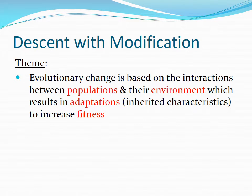This one slide summarizes the next three weeks of material. If you understand this concept, you're going to understand all of evolution by natural selection, also known as descent with modification. The theme for these next few weeks is that evolutionary change is based on the interactions between populations, organisms, and their environment, which results in adaptations — inherited characteristics that increase fitness. Fitness does not mean strength; it means the amount of children that actually survive and are able to reproduce.